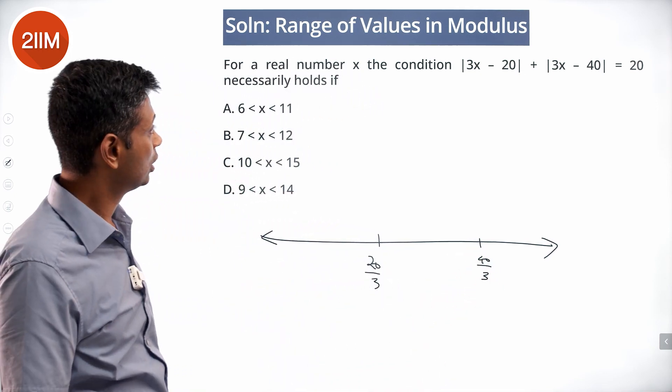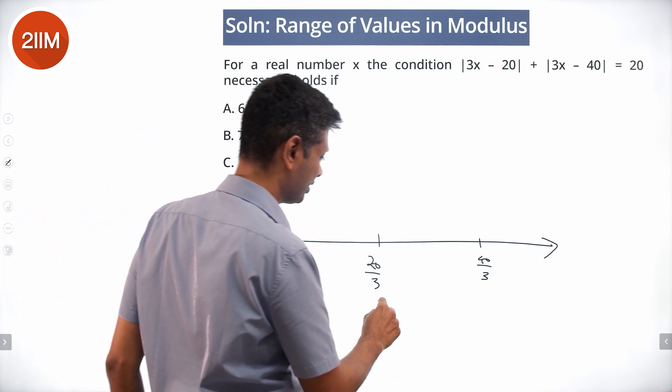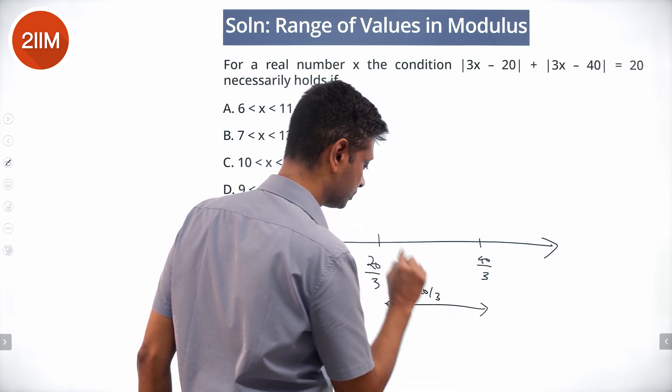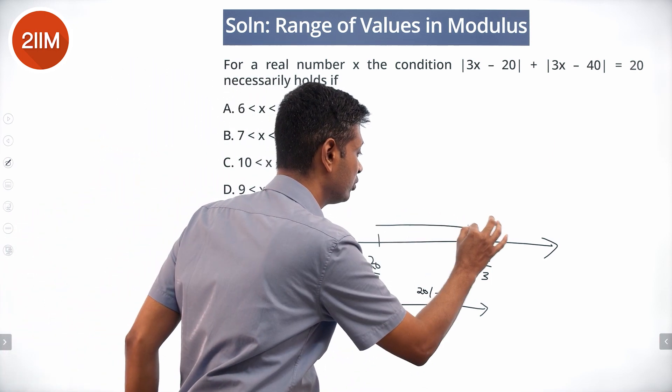Nice. Now x to this, x to that should add up to 20 by 3. This distance is 20 by 3, 40 by 3 minus 20 by 3. Or x has to be a point in between these two.